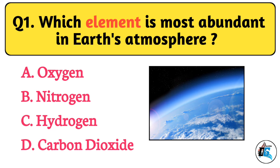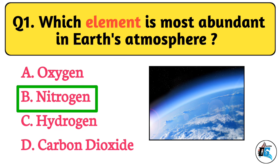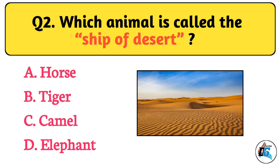Question No. 1. Which element is most abundant in Earth's atmosphere? The right answer is Option B: Nitrogen.